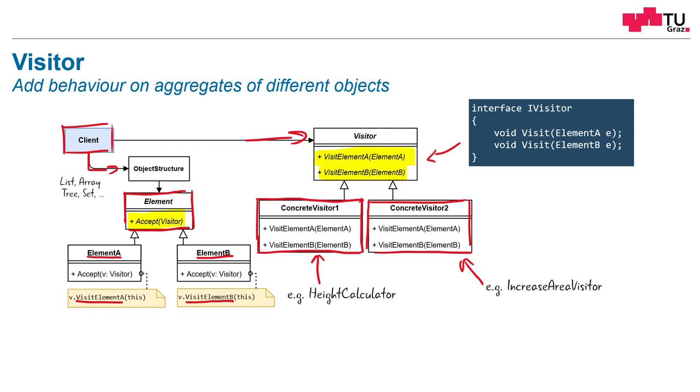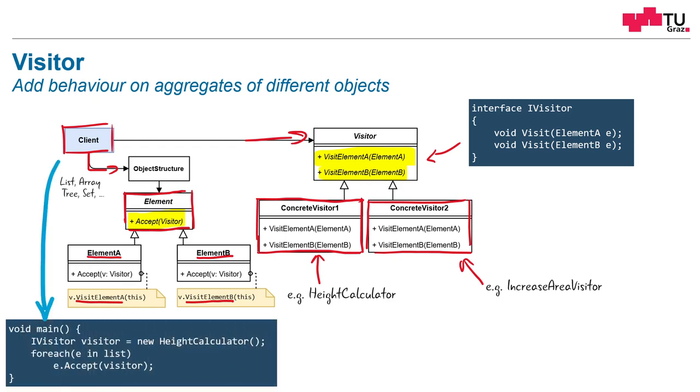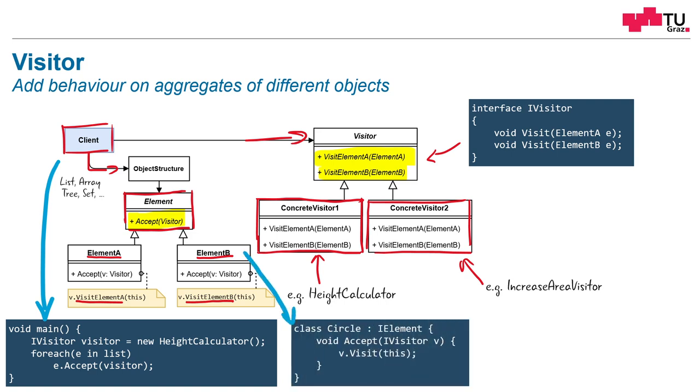Let me give you some source code examples. The client could look like this. First we create a visitor. In this case, we create our height calculator. And then we go over our list of elements. And for each element, we call the accept method and supply our visitor to this method. How could the according element implementation then look like? For example, here. Our class circle implements I element. It has the accept method, which accepts the visitor. And we call the visit method and supply ourselves as a parameter. In this case, we use overloading.